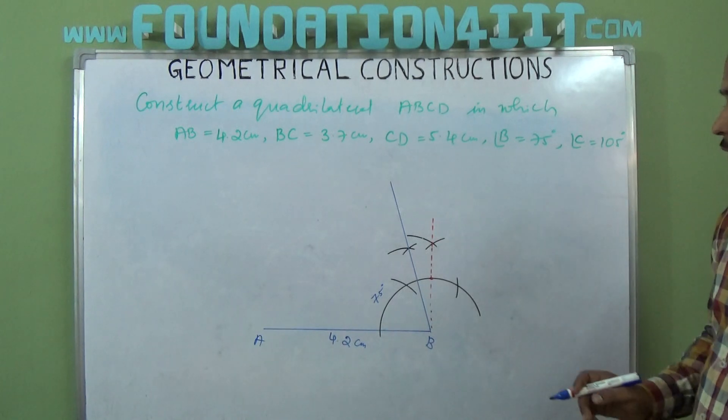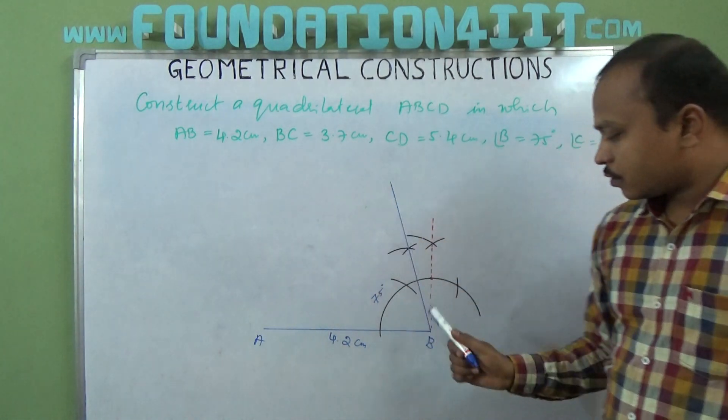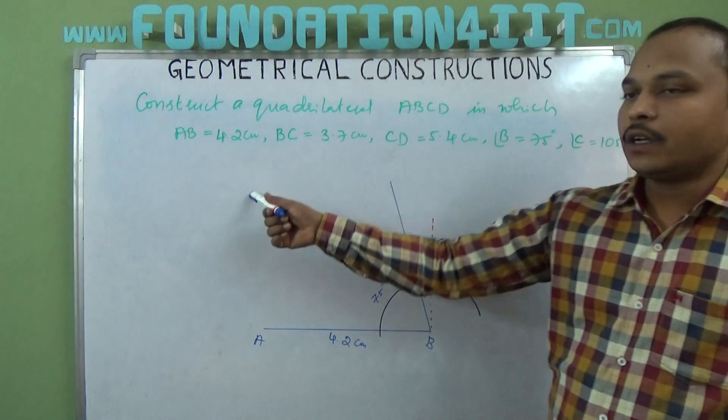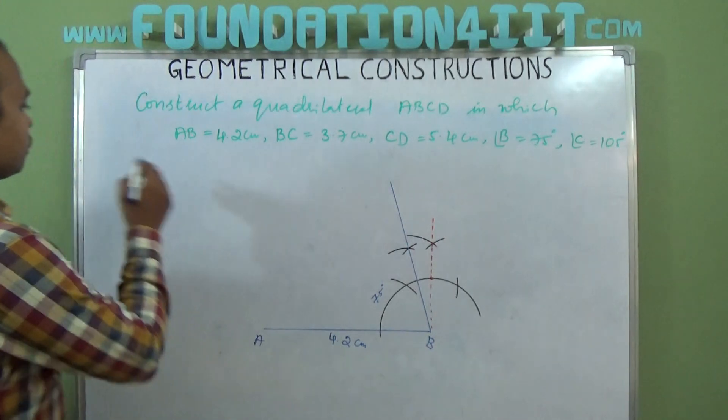Okay, so angle B is 75. Next observe, B to C is 3.7. So AB and CD will come here like cyclic order. We should take if you see rough diagram also.